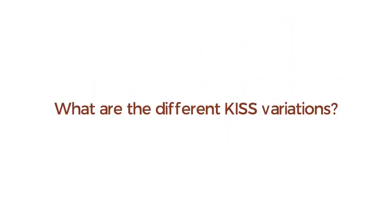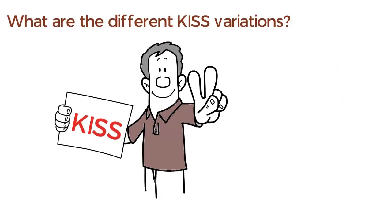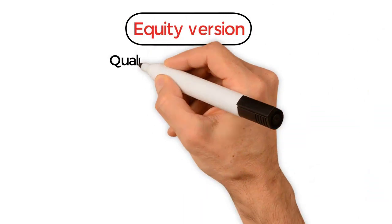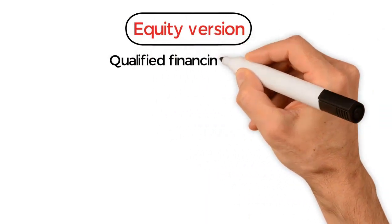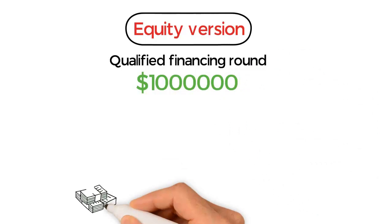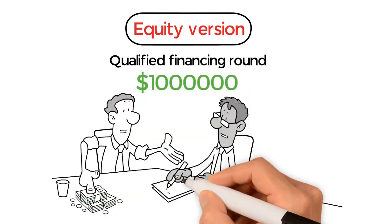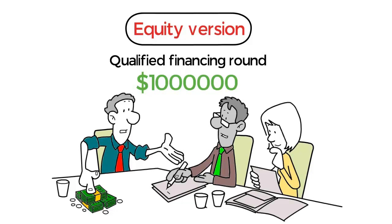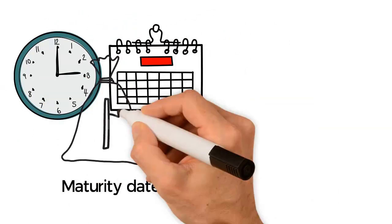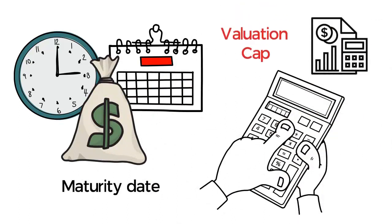What are the different KISS variations? There are two versions of KISS. The first is the equity version. Here, the KISS converts on a qualified financing round, usually at a valuation of not less than $1 million, at the lower of the conversion price calculated using the valuation cap and the discount respectively, or at any time after the maturity date at the conversion price calculated using the valuation cap.